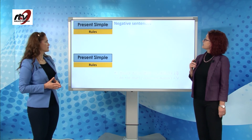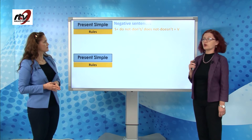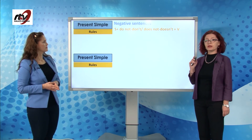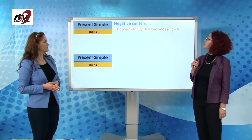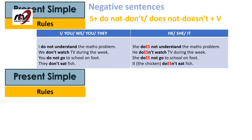The negative sentence has the structure: after the subject we have do not / don't or does not / doesn't, and the verb in the base form with nothing added after it. Like: I don't understand the maths problem, she doesn't understand maths problems. We don't watch TV during the week, he doesn't watch TV. You do not go to school on foot, she does not go to school on foot. They don't eat fish, it doesn't eat fish.